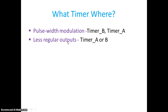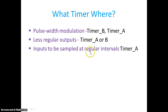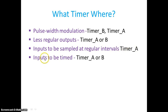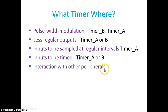For less regular output generation, you can use Timer A or Timer B. For capturing — recording signal rising and falling edges — Timer A or Timer B can be used. If inputs need to be sampled at regular intervals, Timer A is the only option since Timer B does not support sampling mode. For timing measurements, both Timer A and Timer B are supported.